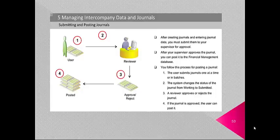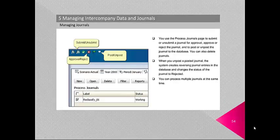After creating journals and entering journal data, you must submit them to your supervisor for approval. After approval, you can post the journal to the Financial Management database. The process is: first, the user submits journals one at a time or in batches; second, the system changes the status from Working to Submitted; a reviewer approves or rejects the journal; and finally, if approved, the user can post it to the database. You use the Process Journals space in workspace to submit, approve, reject, post or unpost a journal. When you unpost a journal, the system creates reversing journal entries and changes the status to Rejected.